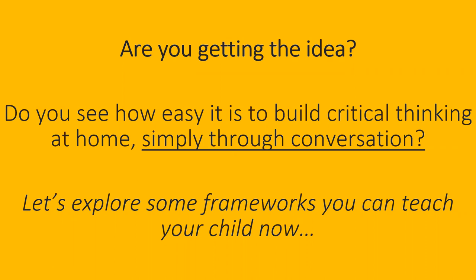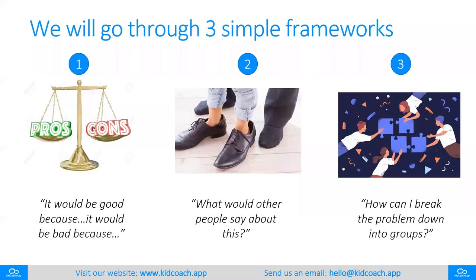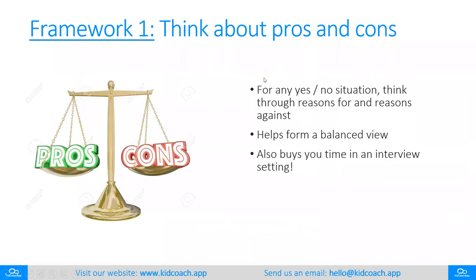Let's put some more structure on it now. I promised you frameworks — three simple frameworks. The first is all about pros and cons thinking: this could be good because, it could be bad because. The second is about taking somebody else's perspective, putting yourself in somebody else's shoes — what would X or Y or Z say about this? And the third is breaking any complex problem into groups or parts to help us think about it and order our thoughts. With each one I'll give you an example, and then we'll have a practice in the chat box.